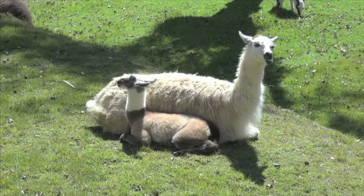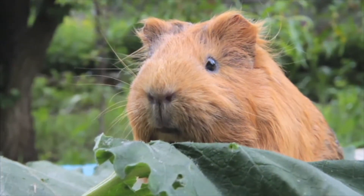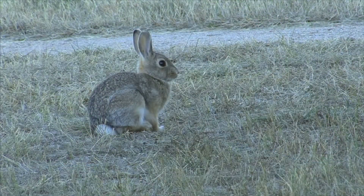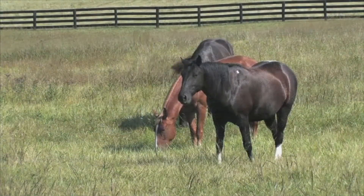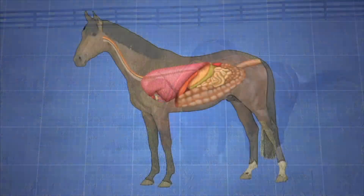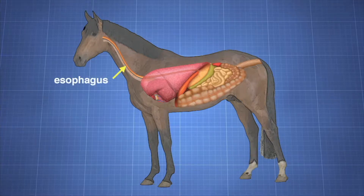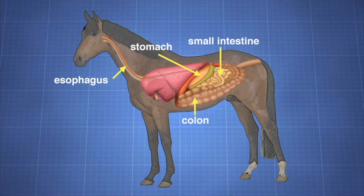A pseudoruminant is an animal that eats large amounts of roughage. Mammals with this type of digestive system include hamsters, rabbits, and horses. Pseudoruminants eat forages as well as grains. The main parts of a pseudoruminant's digestive system include the esophagus, stomach, small intestine, colon, cecum, and rectum.